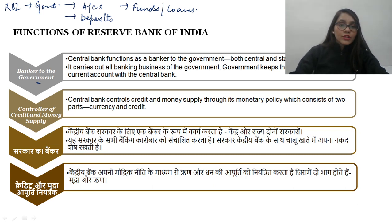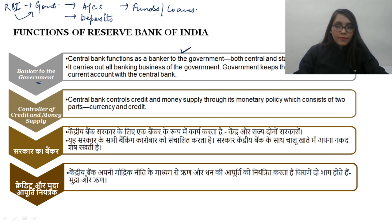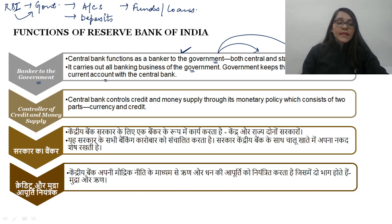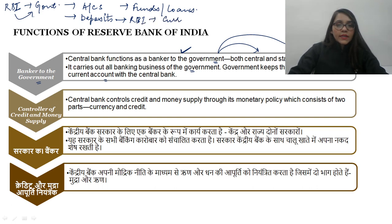RBI also acts as the bank for central clearance, settlement, and transfers. The seventh function is Banker to the Government — just as commercial banks are available for the public, RBI is available for the government. Both state and central government accounts are maintained by RBI, government deposits are kept with RBI, and if the government needs funds or loans, it goes to RBI.